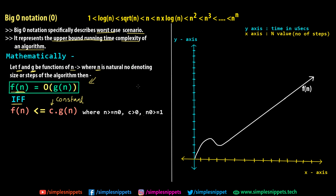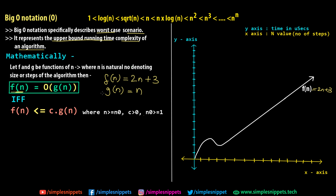Let f(n) = 2n + 3, and let g(n) = n. What we want to prove is that when we multiply a constant c by g(n), it is always greater than or equal to f(n) after a particular value n₀. For g(n) = n to be the upper bound of f(n) = 2n + 3, we need: 2n + 3 ≤ c·n. Let's take c = 5 and start with n = 1, since n represents steps and must be a positive number.